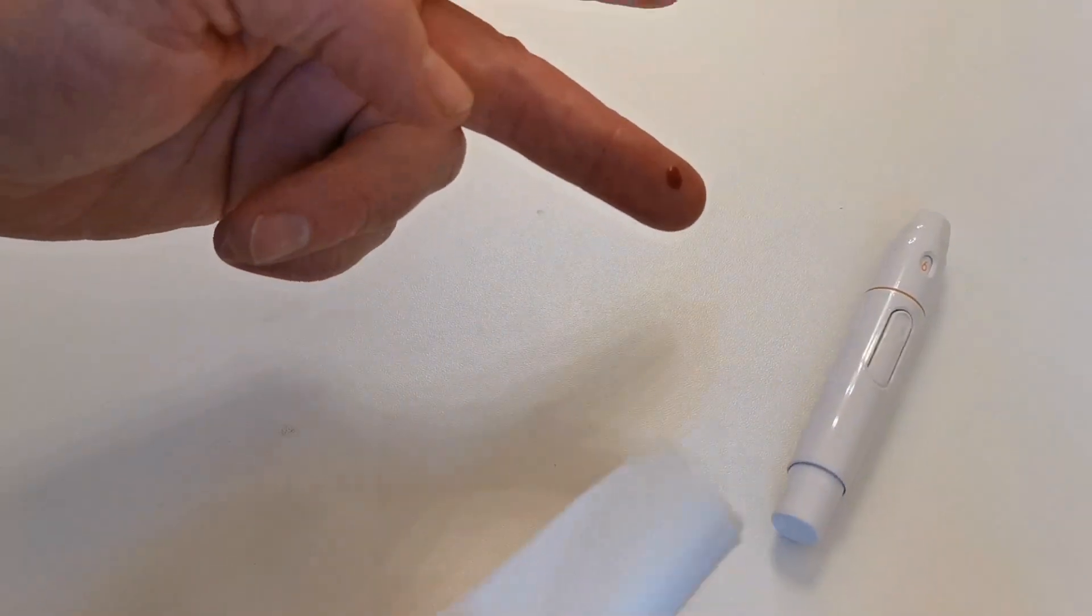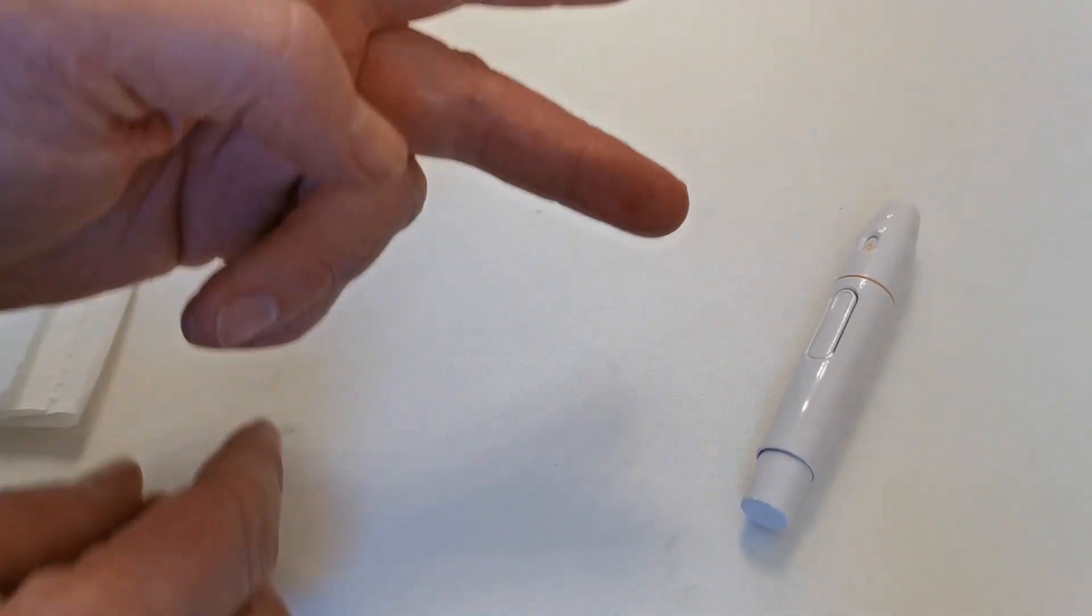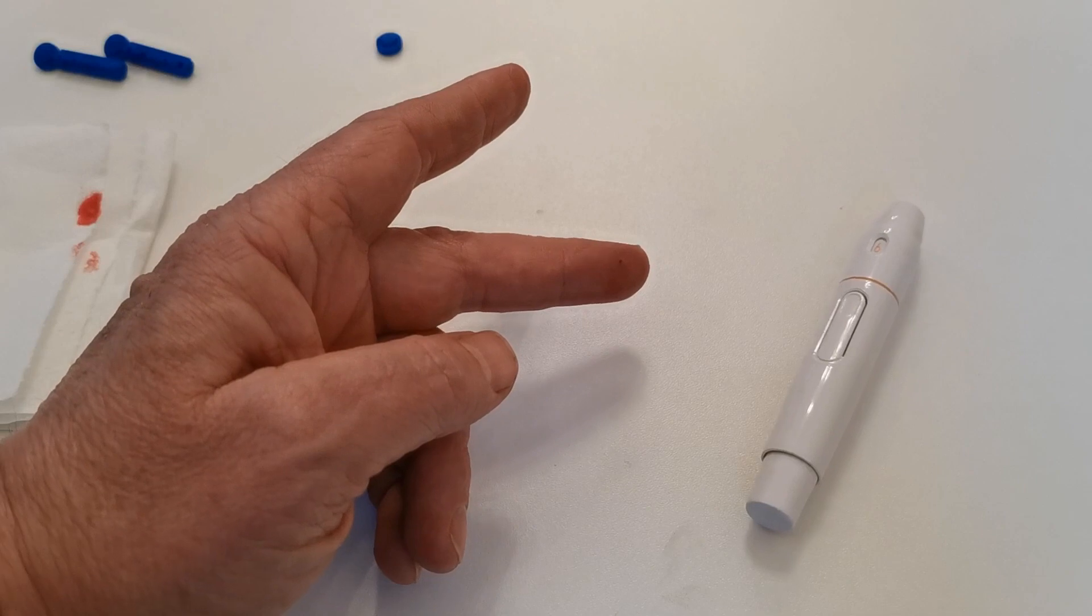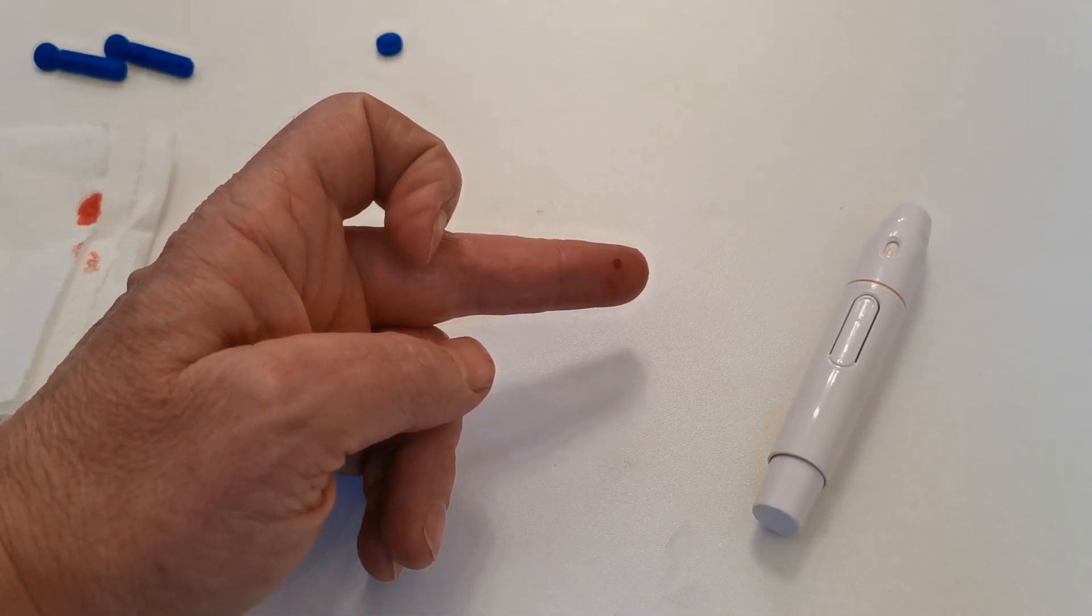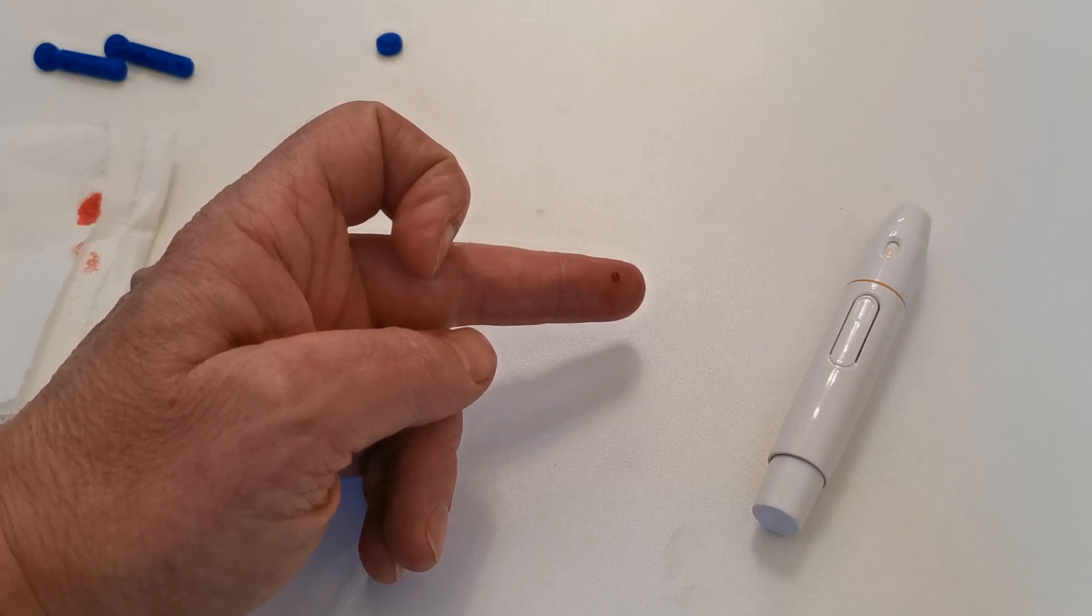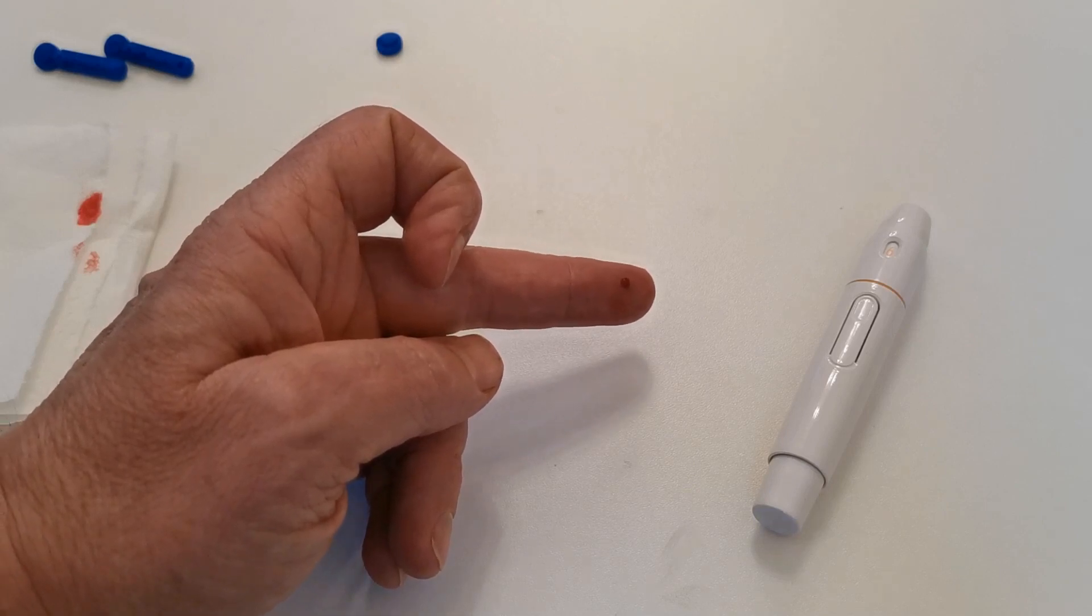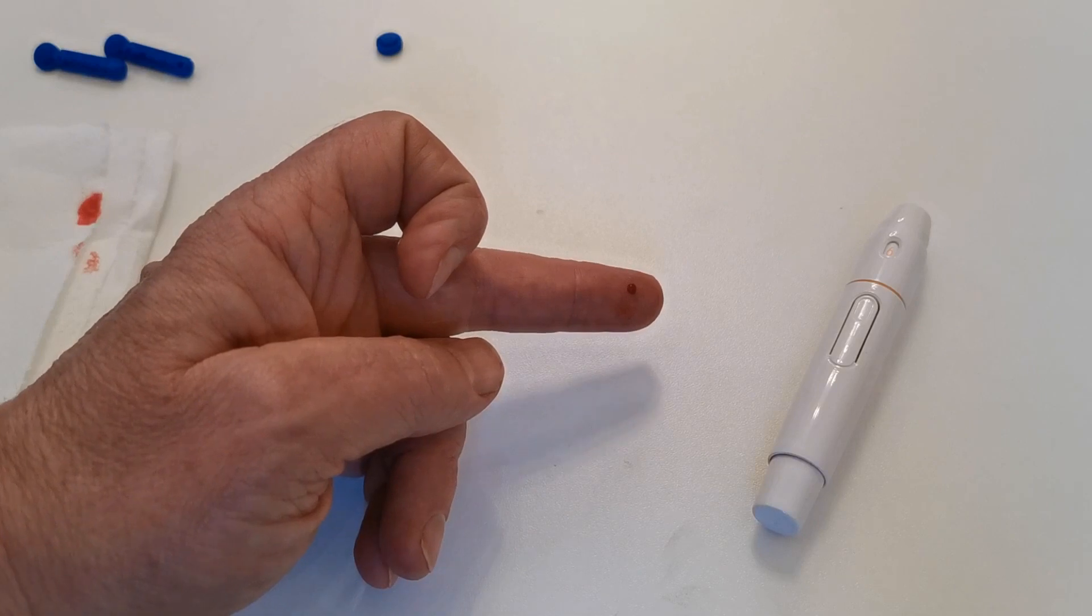First drop forms nicely, remove it. Allow the second droplet to form naturally. This may take a little time. Don't panic. If you've got the correct depth, then you should form this second droplet completely naturally. Do not squeeze the finger or finger pulp.